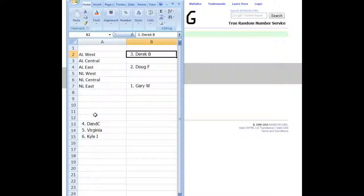DNC is up. Followed by Virginia and Kyle I. Well, Kyle I, you get what's left.